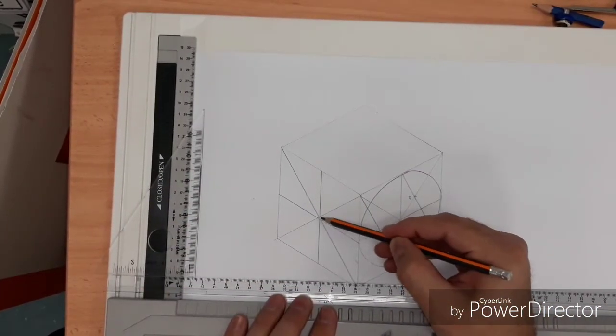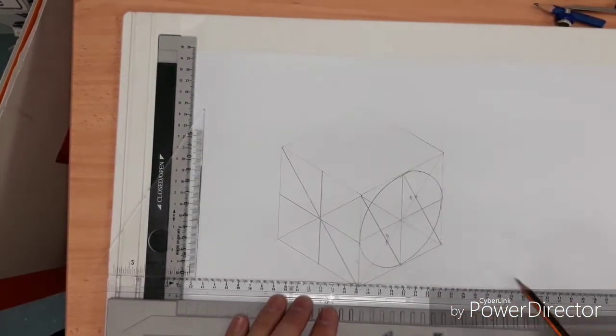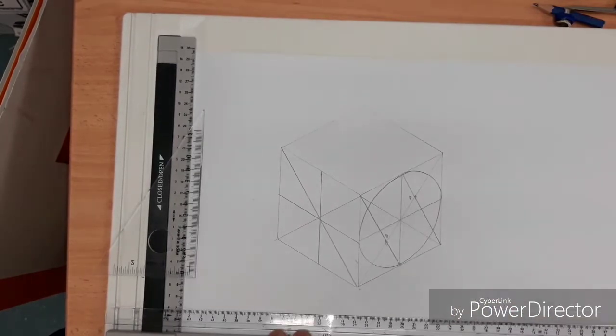I'm trying to get this done quite quickly. As you can see, any lack of accuracy here with your line drawing is obviously going to affect the accuracy of your final isometric circle.